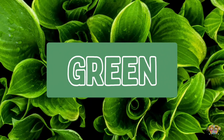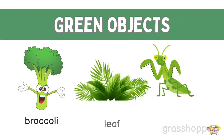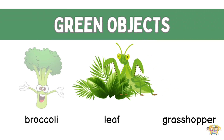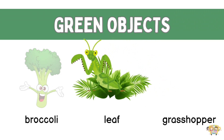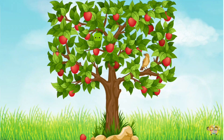Let's move on to the color green. Objects that are green are broccoli, leaf and grasshopper. The green apple hiding among the red apples — exactly, it's over there.